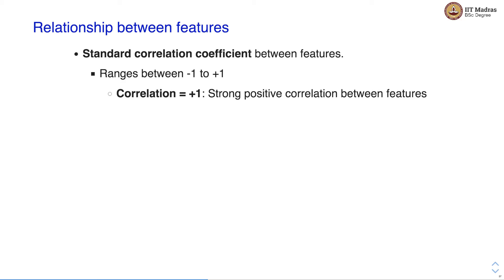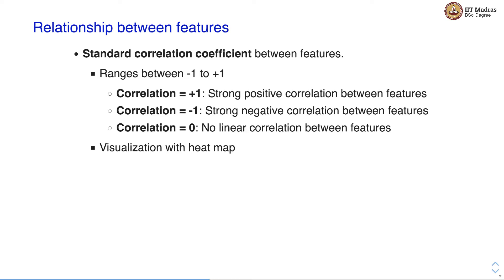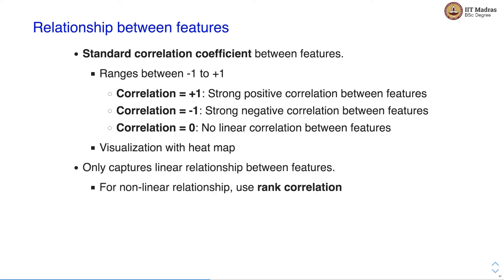Apart from visualizing individual features, we can also study the relationship between features. One such relationship is the standard correlation coefficient, which ranges between minus 1 and plus 1. A correlation of plus 1 denotes a very strong positive correlation, minus 1 denotes a very strong negative correlation, and 0 means there is no linear correlation between the features. We can visualize correlation with a heat map. Note that the standard correlation coefficient only captures linear relationships — if you believe there is a non-linear relationship, you can use Spearman correlation for that purpose.